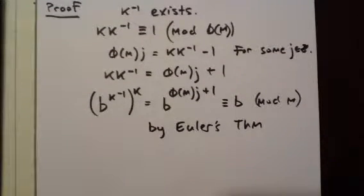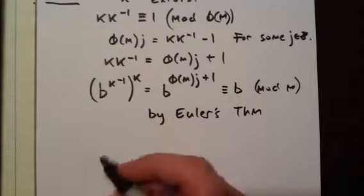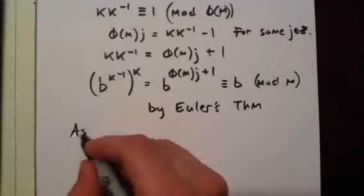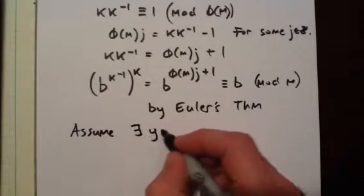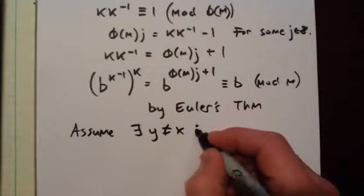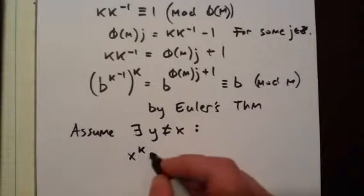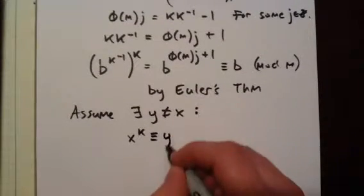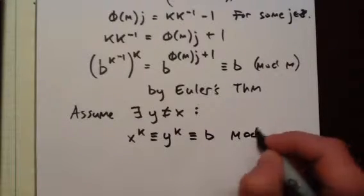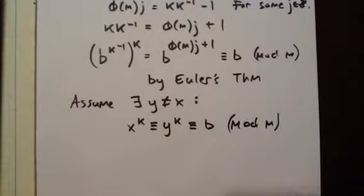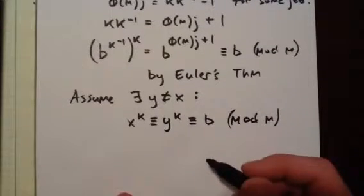So we've proved there is a solution; now we've got to prove it's unique. Let's assume there is a y ≠ x such that x^k ≡ y^k ≡ b (mod m). You probably already see what to do: